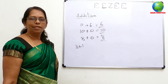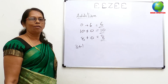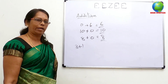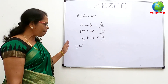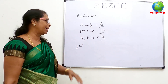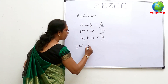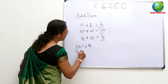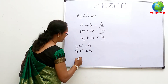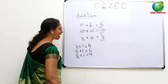5 plus 1, that is 6. 8 plus 1, that is 9.